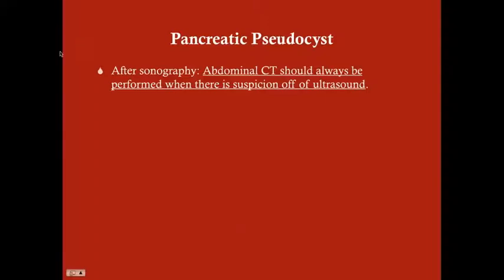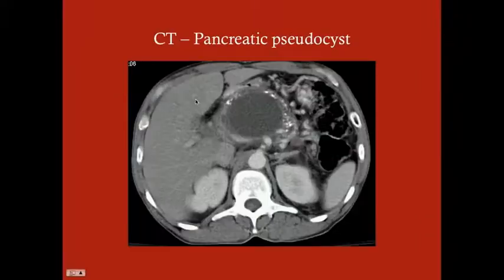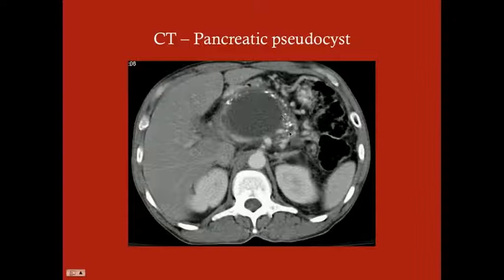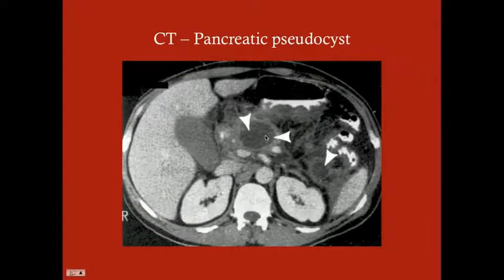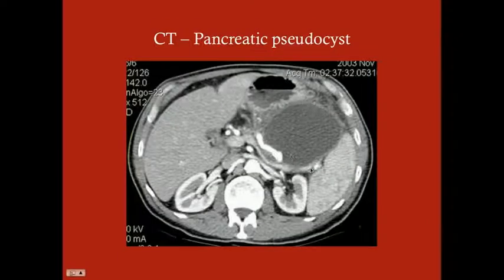After sonography, abdominal CT should always be performed when pseudocyst is suspected. On CT, you can see the cyst with the pancreas compressed around it. In patients with chronic pancreatitis, calcifications may be visible. Multiple pseudocysts can also be identified on CT.